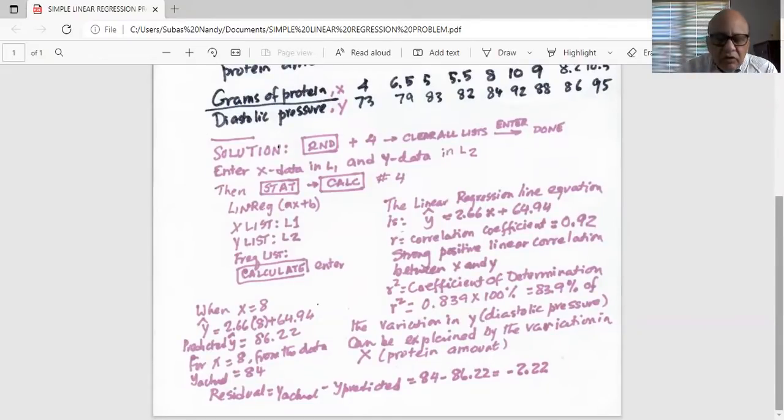So if you don't see it, then you do 2nd Y equal to, then select number one. And make sure the first line, the button is on. And the type of plot you want to make is the scatter plot, which is the first type of chart. Put the cursor on the first type of chart and hit enter, so that the cursor is flashing on first chart.